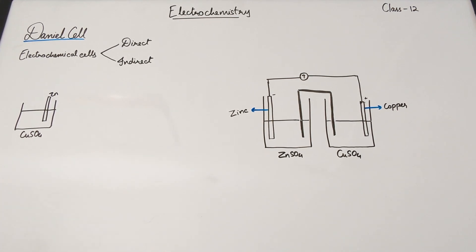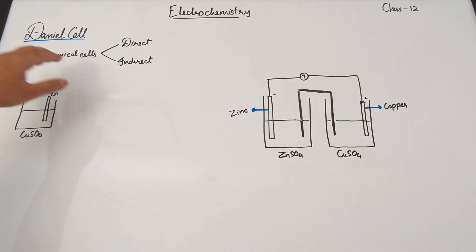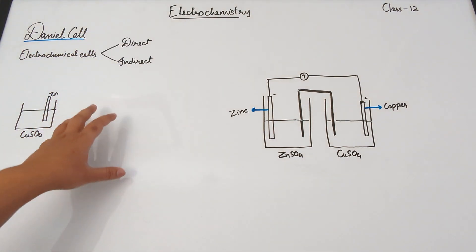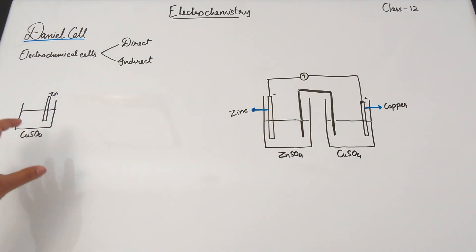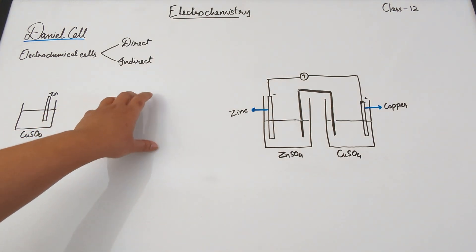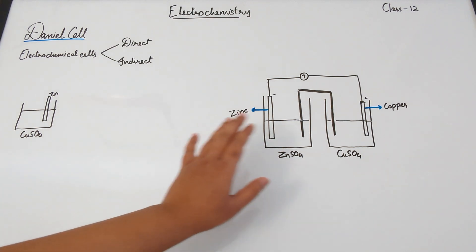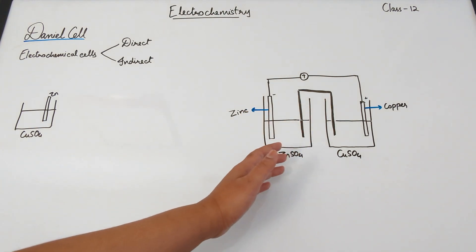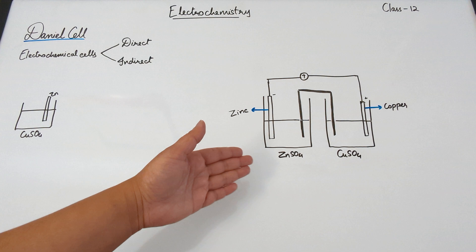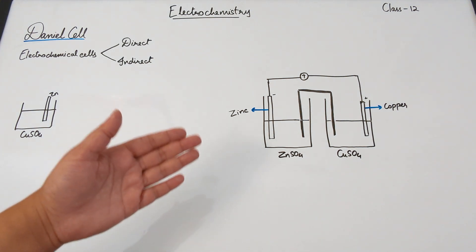In this video we are going to be discussing the Daniell cell, but before that we need to discuss what you learned in class 11 in the chapter on redox reactions. Electrochemical cells are classified basically into two types: direct and indirect cells. Direct cells are the ones where both the oxidation and the reduction reaction take place in the same vessel. Indirect cells have them taking place in different vessels, and the Daniell cell is an example of an indirect electrochemical cell.